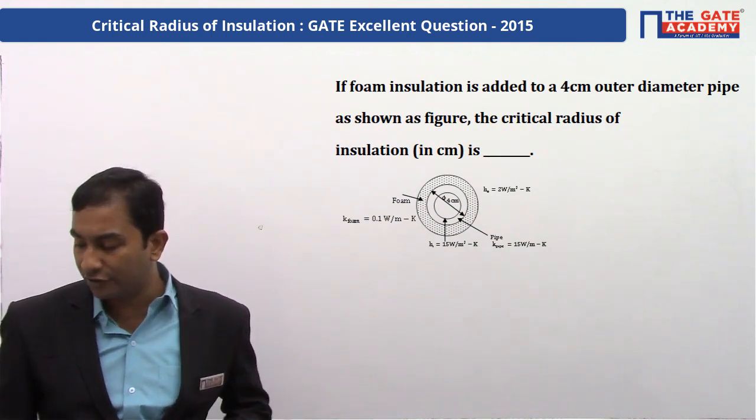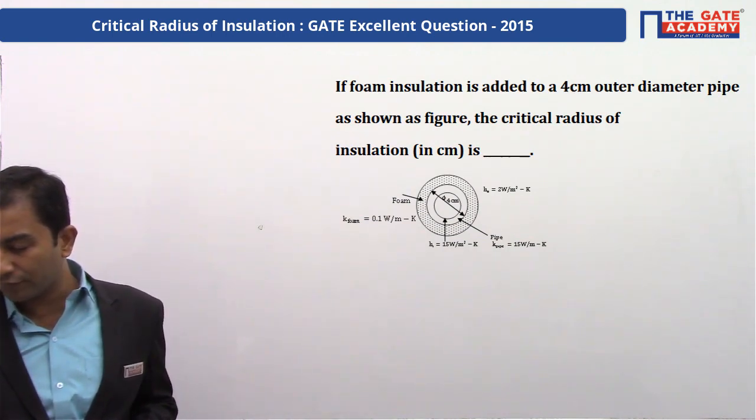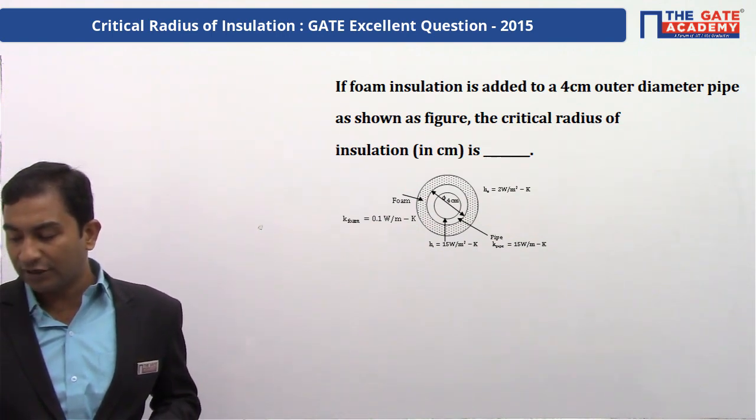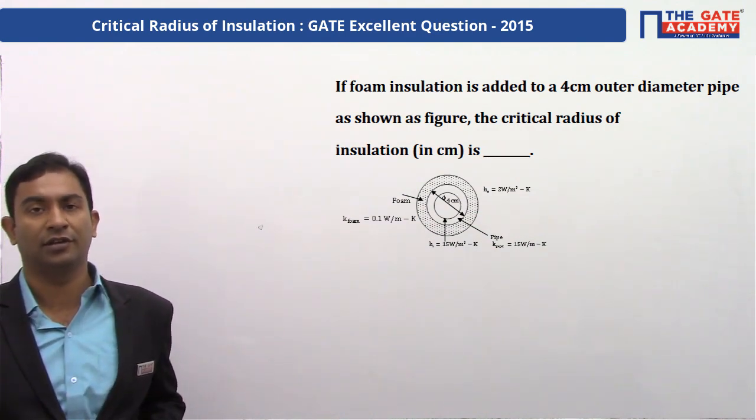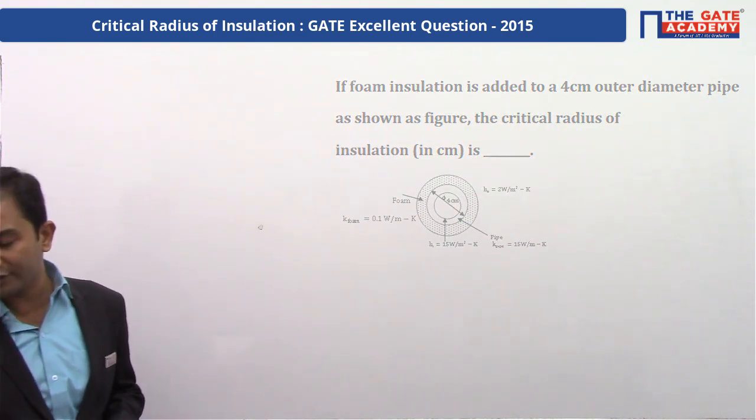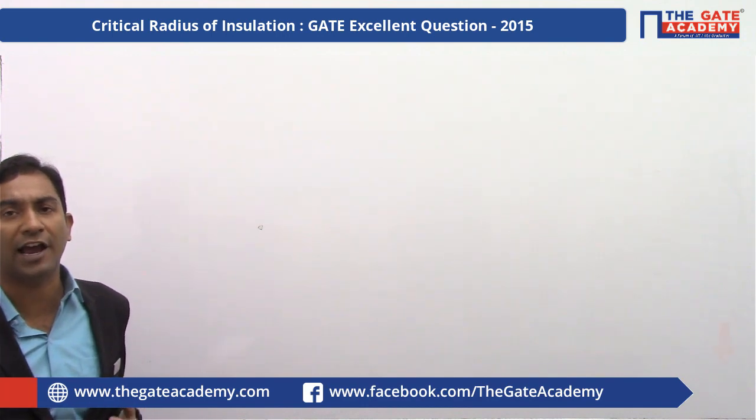If a foam insulation is added to a 4 centimeter outer diameter pipe, as shown in the figure, the critical radius of insulation in centimeter is—the figure is as shown over here. Now here we can see there is a 4 centimeter diameter pipe over which there is a foam insulation that is added.